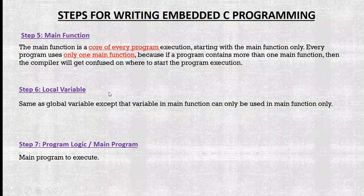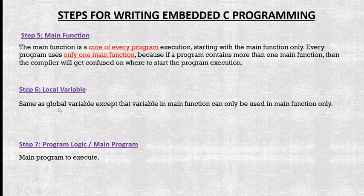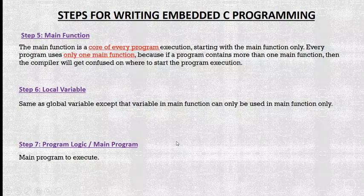Step five is the main function. The main function is the core of the entire program, and we have only one main function. Step six is declaring local variables, and step seven is the programming logic — where we write our main program.